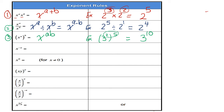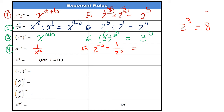Fourth rule: X to the power of negative a is the same as 1 over X to the power of a — it is the reciprocal of the value. For example, we know that 2 to the power of 3 is 8. So 2 to the power of negative 3 is the same as 1 over 2 to the power of 3, which equals 1 over 8.